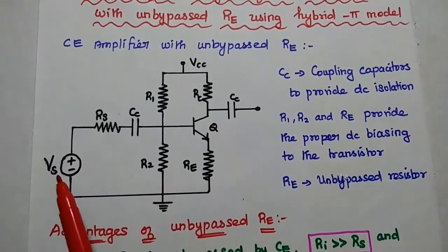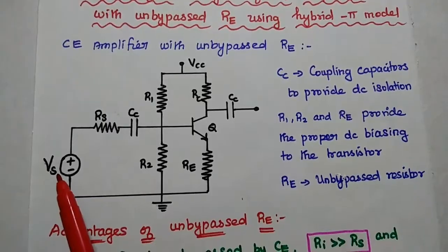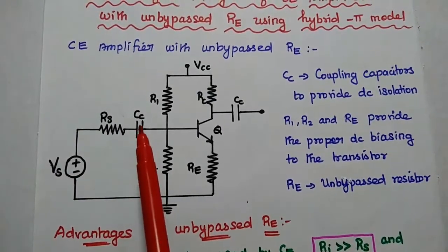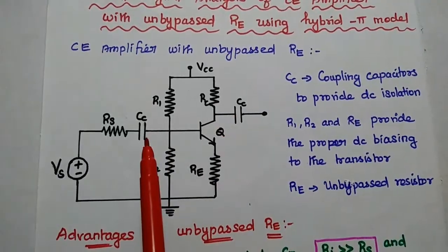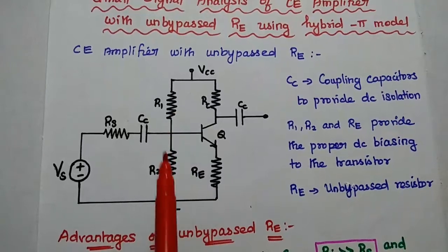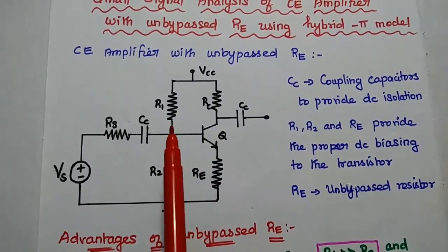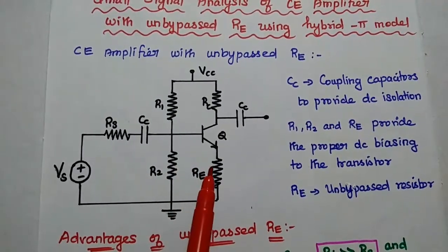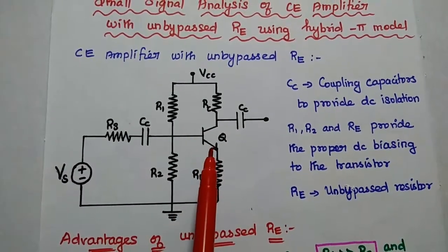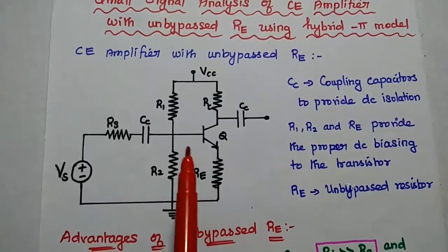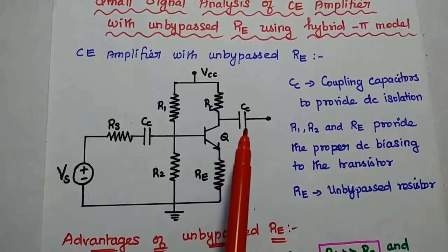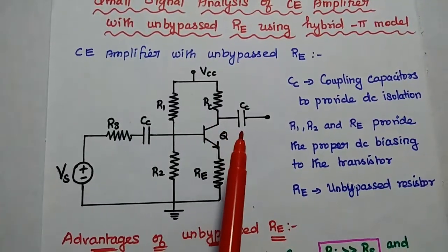In this circuit, Vs represents the voltage signal source. Rs is the source resistance. The coupling capacitors are mainly used to provide DC isolation. R1, R2 and RE resistors are used to provide the proper DC biasing to the transistor to get the maximum gain. RC is the collector resistor, and we can get the output across this collector resistor.